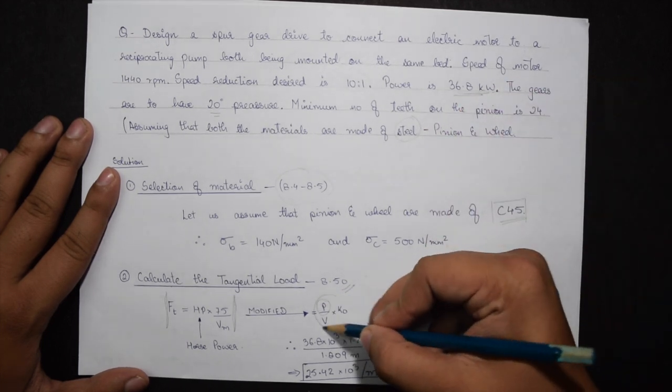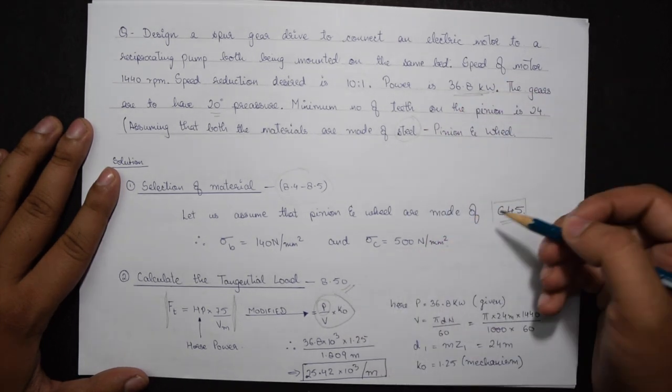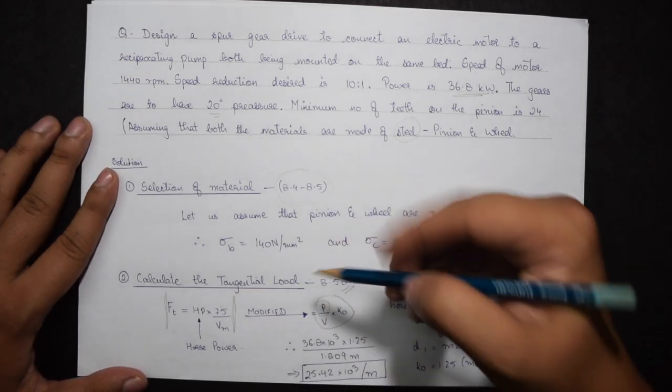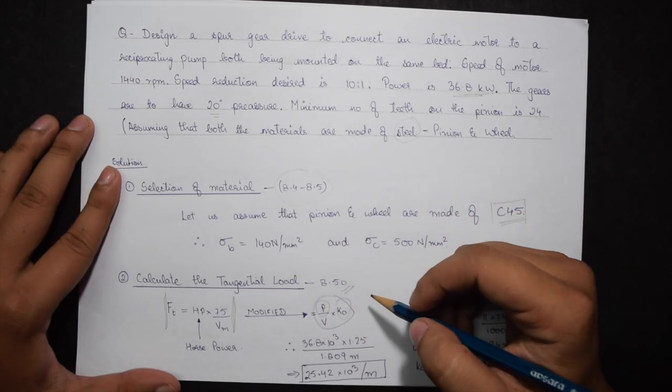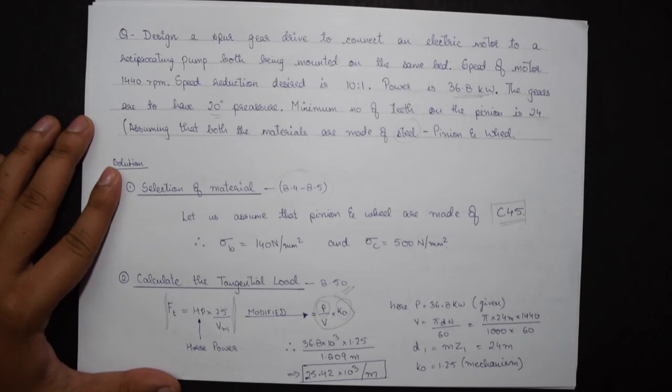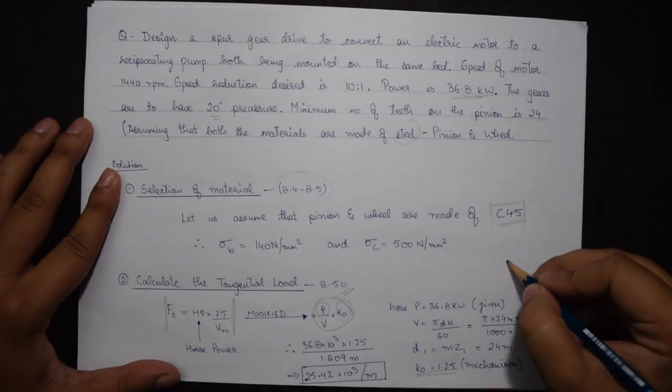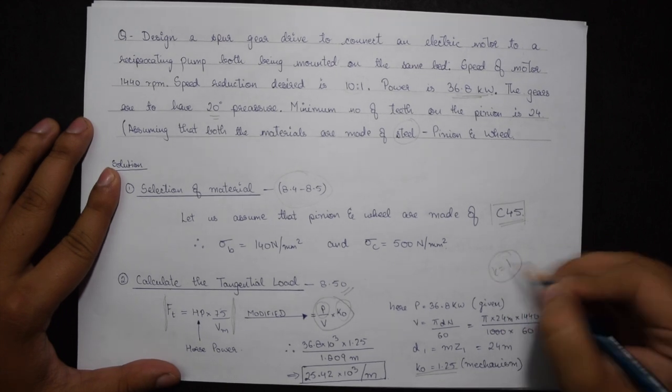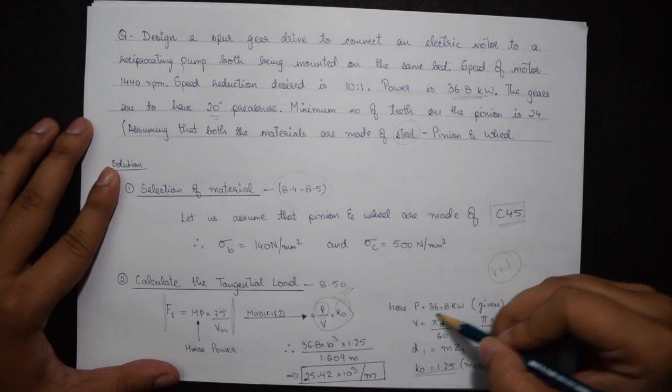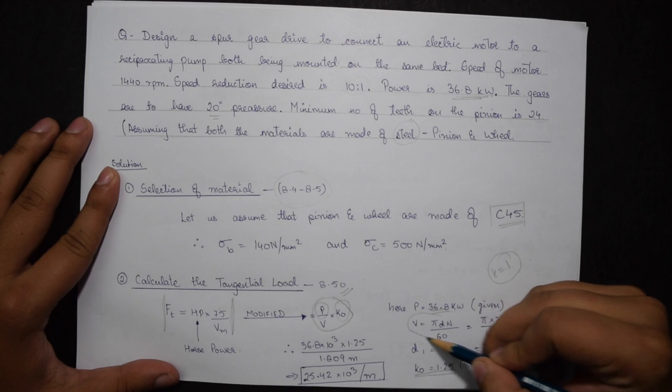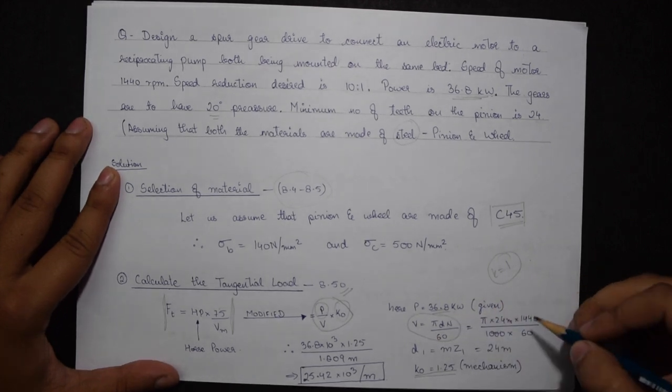Instead of 75 we will be using K naught. Now K naught for any given mechanism is 1.25, and if the machinery is stationary it is 1. P is given in the question and V can be found out by the formula pi D n divided by 60.